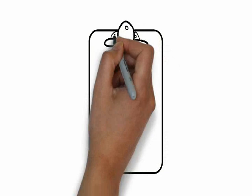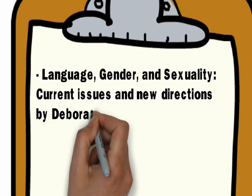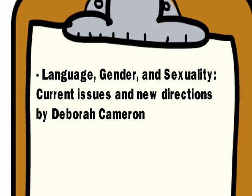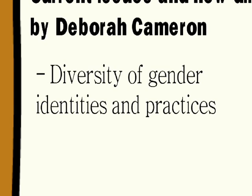To continue, we are going to explain the following documents: Language, Gender and Sexuality: Current Issues and New Directions by Deborah Cameron, and Feminist Theories of Subjectivity: Judith Butler and Julia Kristeva by Roxana Elena Donku. The document by Deborah Cameron talks about the research made by different authors in order to develop and explain theories regarding the diversity of gender identities and practices.